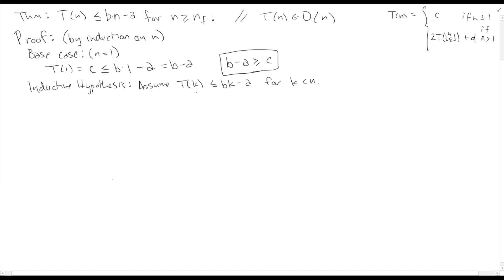Okay, so again, the change that we made to our theorem is going to trickle down into our inductive hypothesis. Up here we had bn minus a. So now down here we need to make that bk minus a. Again, just restating what we're trying to prove in terms of k. Okay, let's try again to complete our proof. Now we're going to try it with, again, for n greater than 1.